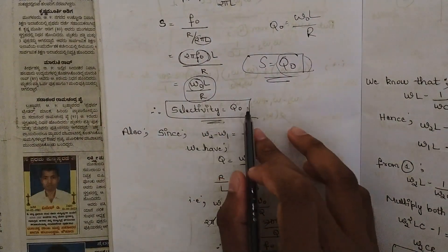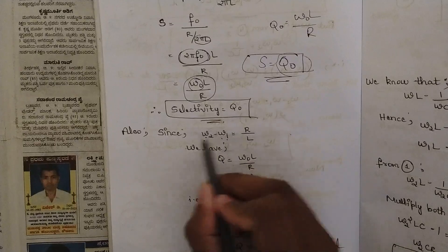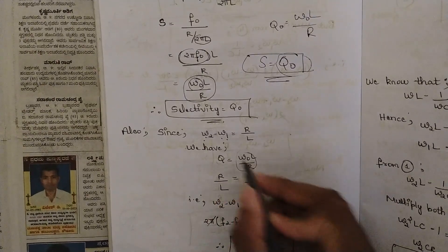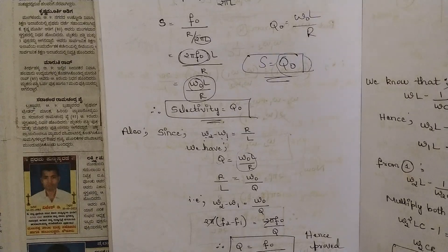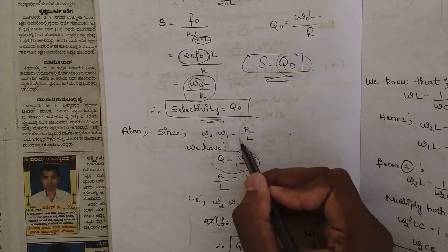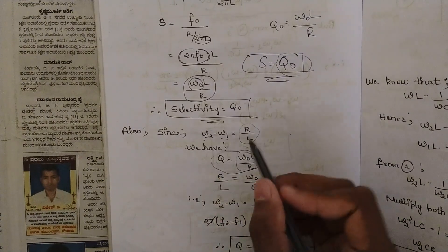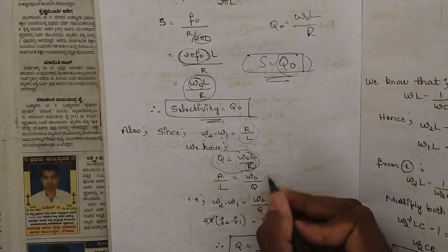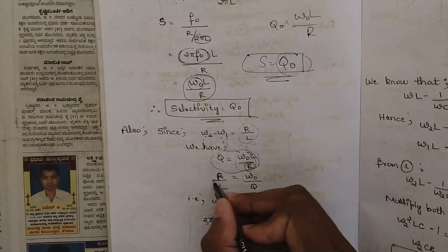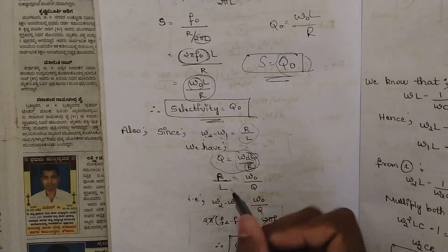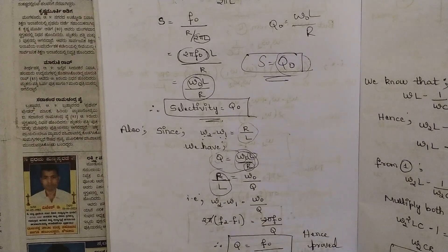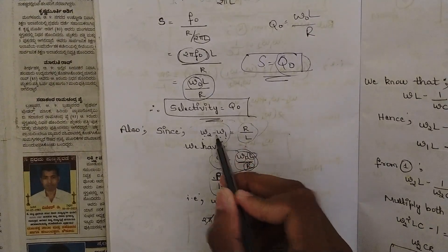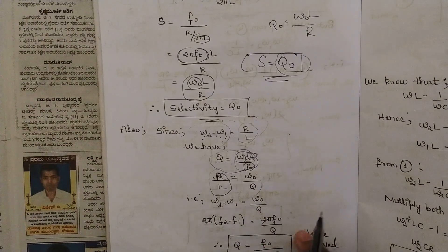Since ω2 minus ω1 — the difference between the half power frequencies — equals R/L, and Q equals ω0·L/R, I want to express R/L from the Q equation. Cross-multiplying, R/L equals ω0 divided by Q. We now have R/L common in both equations, so we can equate them: ω2 minus ω1 equals ω0 divided by Q.